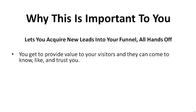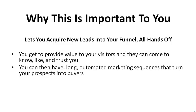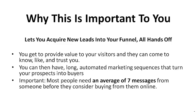A person is 100% more likely to buy something from you if they know, like, and trust you. When you set up automated systems within your business, you can have long automated marketing sequences that turn prospects into buyers. You need them to be long and automated because most people need an average of seven messages from someone before they consider buying. Sometimes they send you email after email, message after message, even a physical sales letter in the mail, and you come to grow to know, like, and trust that person.